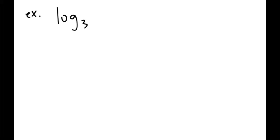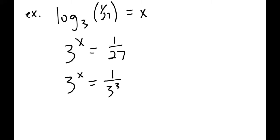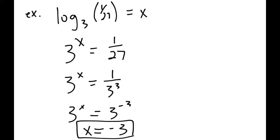Let's look at another example. If I give you log base 3 of 1/27, the good thing is you can solve these with fractions or decimals — it doesn't make any difference. Using the same formula, we change it to: 3 to the power of x equals 1/27. To make the bases the same, 1/27 is the same as 1 over 3 to the power of 3, since 3 times 3 is 9 times 3 is 27. And remember that a fraction like that can be written as 3 to the negative 3. So x equals negative 3, and we're done.